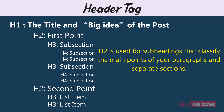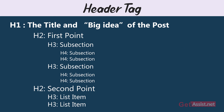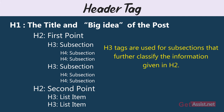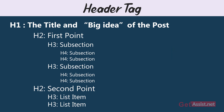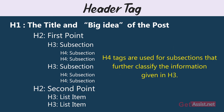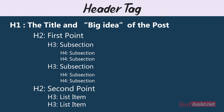H2 is used for subheadings that classify the main points of your paragraphs and separate sections. You can use keywords related to the main keyword while creating H2 tags so that readers can easily find what sections they want to read. H3 tags are used for subsections that further classify the information given in H2. H4 tags are used for subsections that further classify the information given in H3, and similarly you can go up to H6.